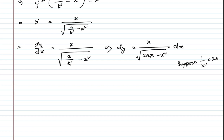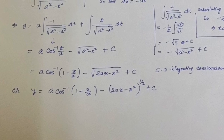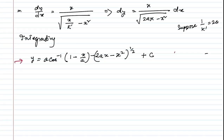After integrating (the full integration steps are shown in a separate reference), we obtain the equation of the path. C is the constant of integration.